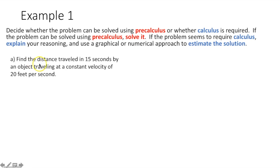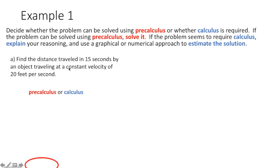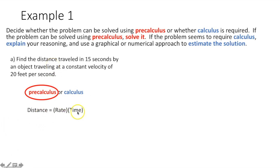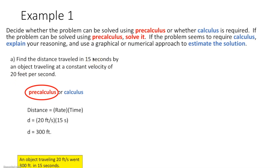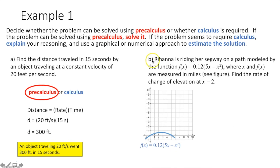The first one says: find the distance traveled in 15 seconds by an object traveling at a constant velocity of 20 feet per second. You could know this from pre-calculus or physics — distance equals rate times time, the dirt formula. It gives us a time and a rate, so we multiply the two values together and end up getting a distance of 300 feet.